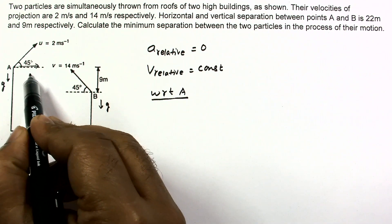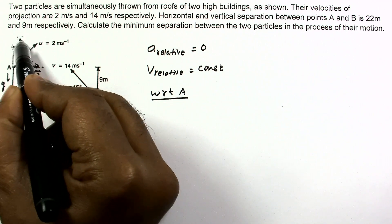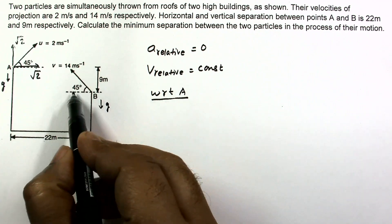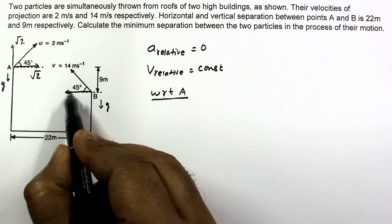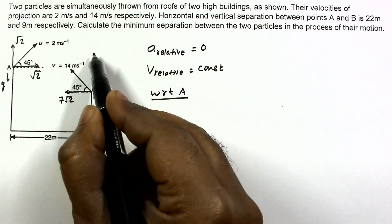Calculating velocity of B with respect to A, let us take the components. This component will be root 2 and this component is also root 2. This component is 14 by root 2 and that will be 7 root 2. And this component is 7 root 2.